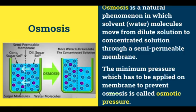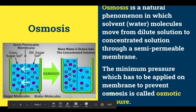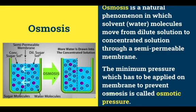Osmosis means it is a natural phenomenon in which solvent or water molecules move from dilute solution to concentrated solution through a semi-permeable membrane. Here you can see concentrated sugar solution is taken on one side of the semi-permeable membrane and on the other side it is a dilute sugar solution. When osmosis takes place, the water molecules are shown in blue color whereas the violet color represents the sugar molecules.